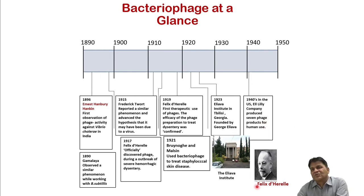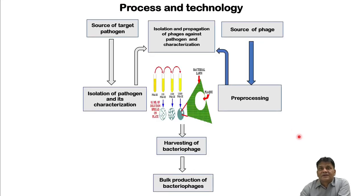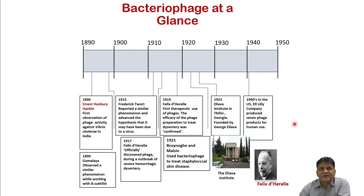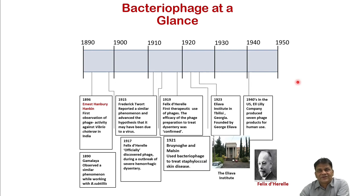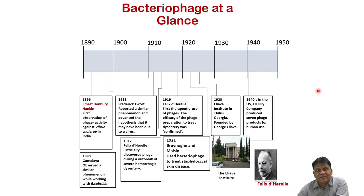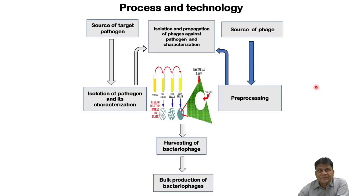The Eliava Institute was founded in Georgia in 1923 by George Eliava, who was later killed by the Russian army. Felix d'Hérelle also fled and conducted clinical trials in India. Phage therapy then went into the dark because antibiotics were introduced — broad-spectrum antibiotics eliminated the need for precise bacterial identification. But bacteriophages are like smart bombs — they are strain-specific — and now, reverting back to the pre-antibiotic era, we are bound to explore different alternatives.